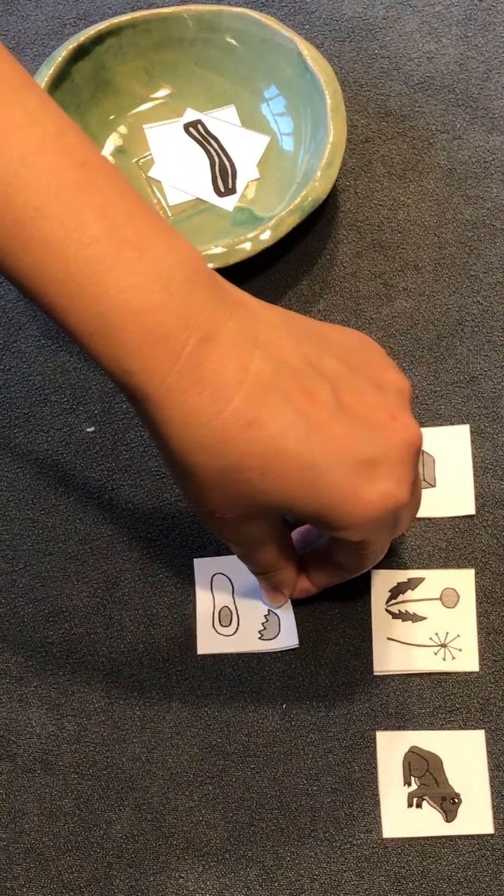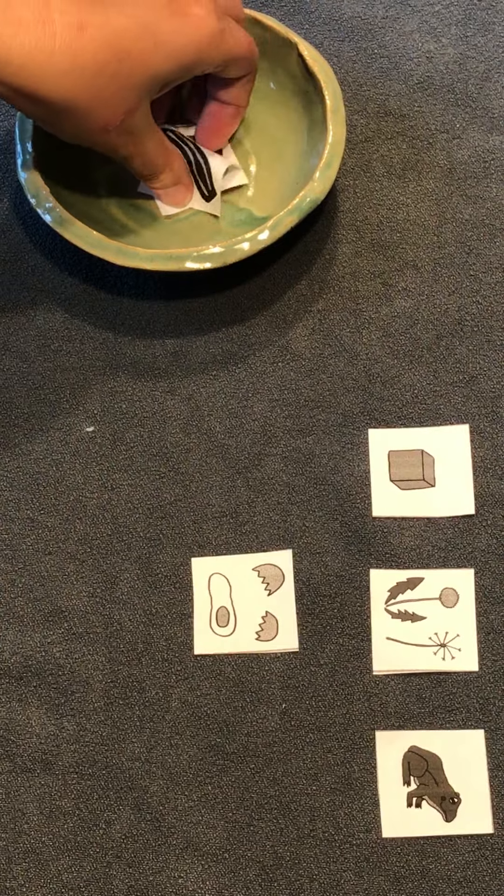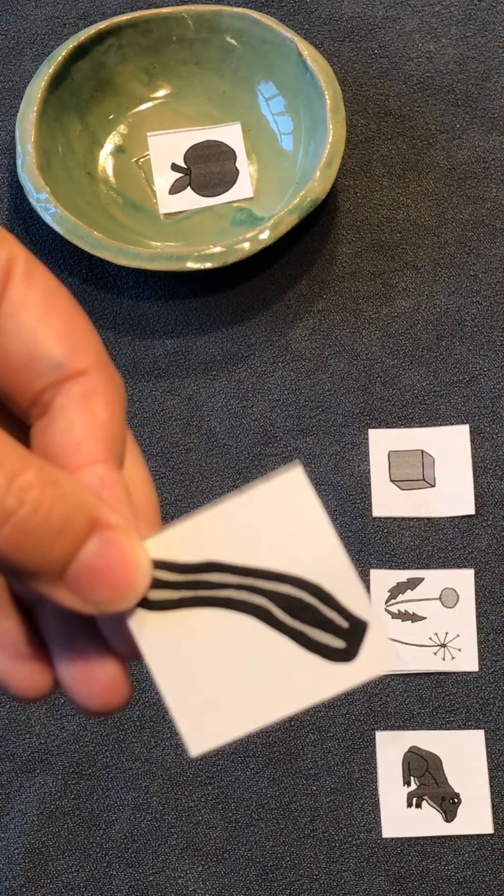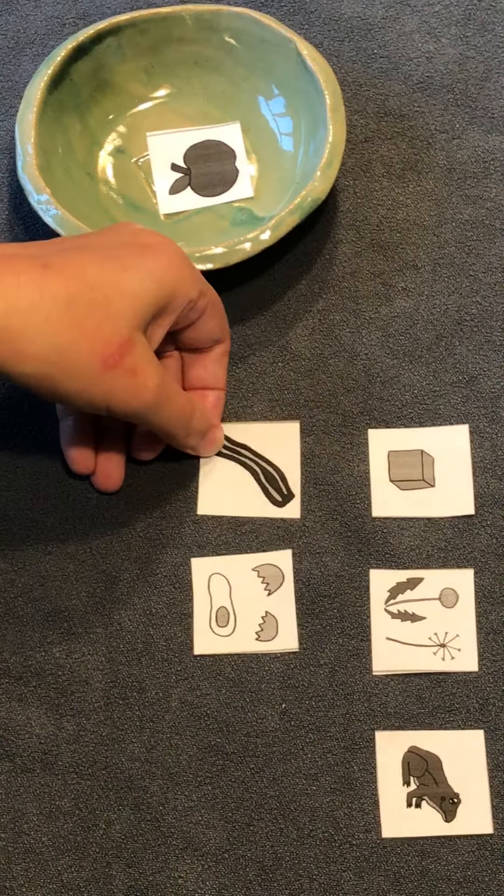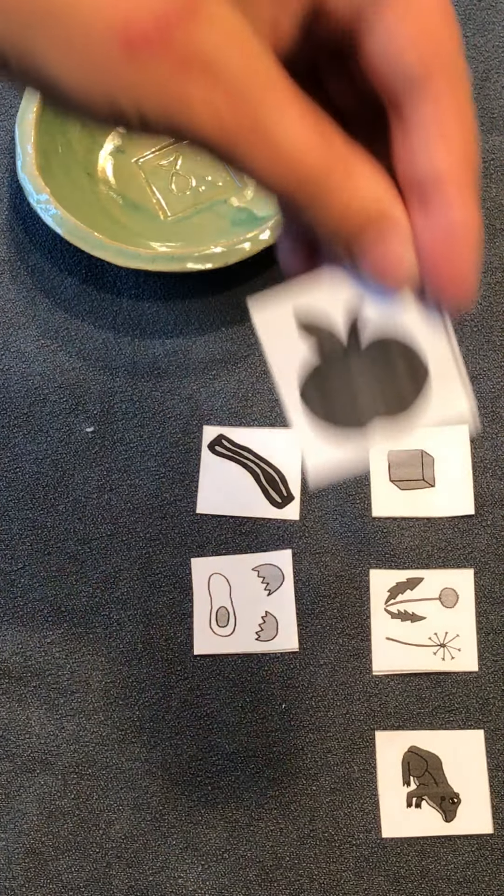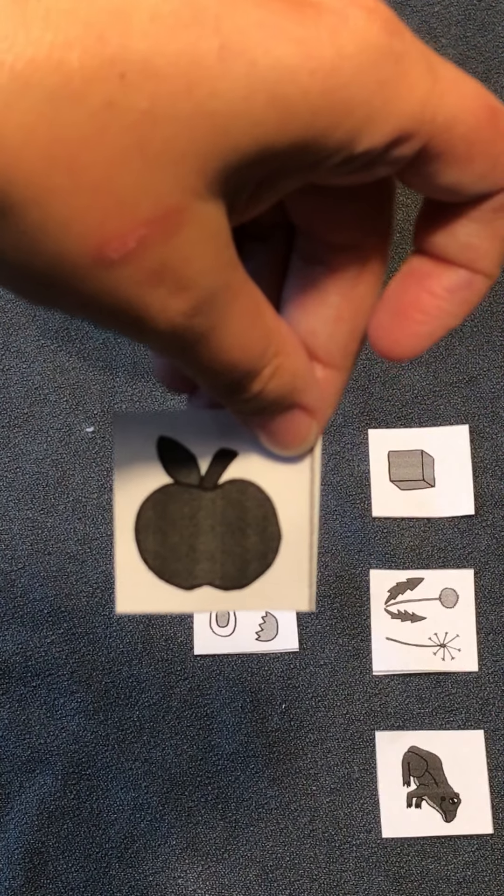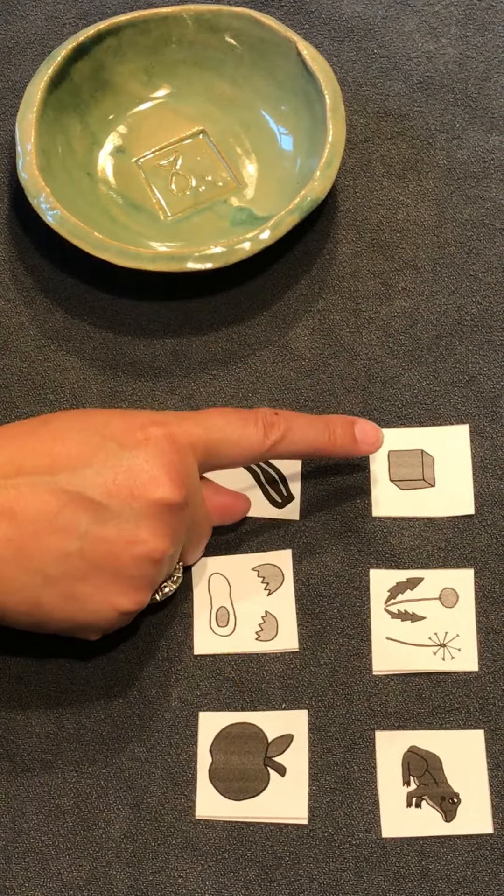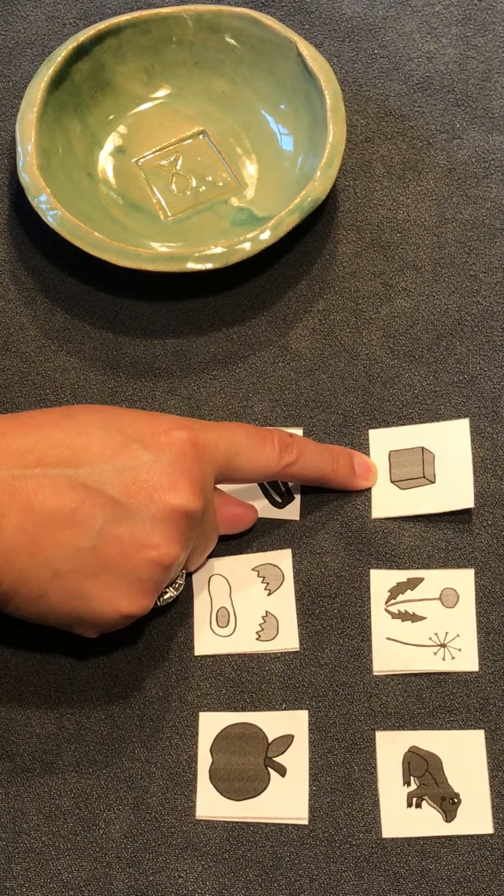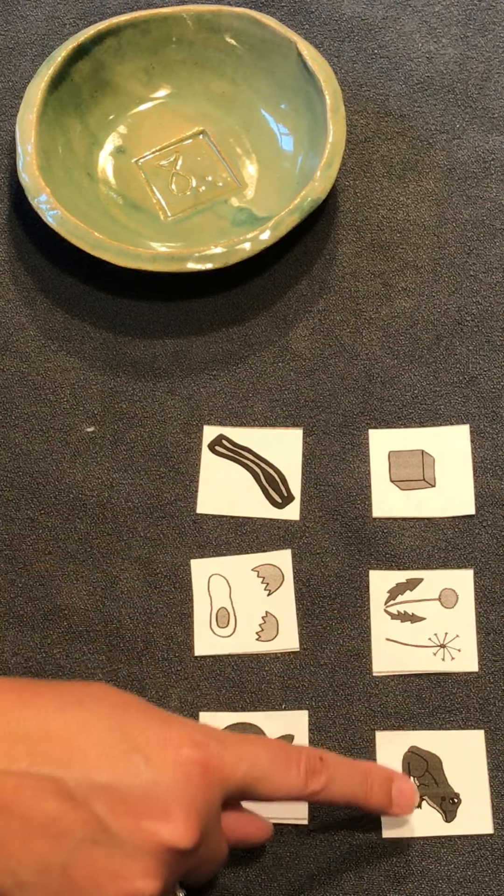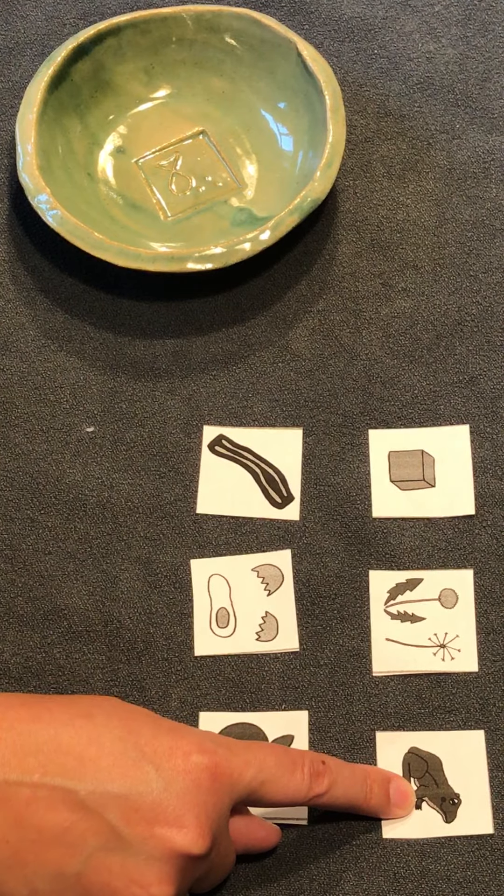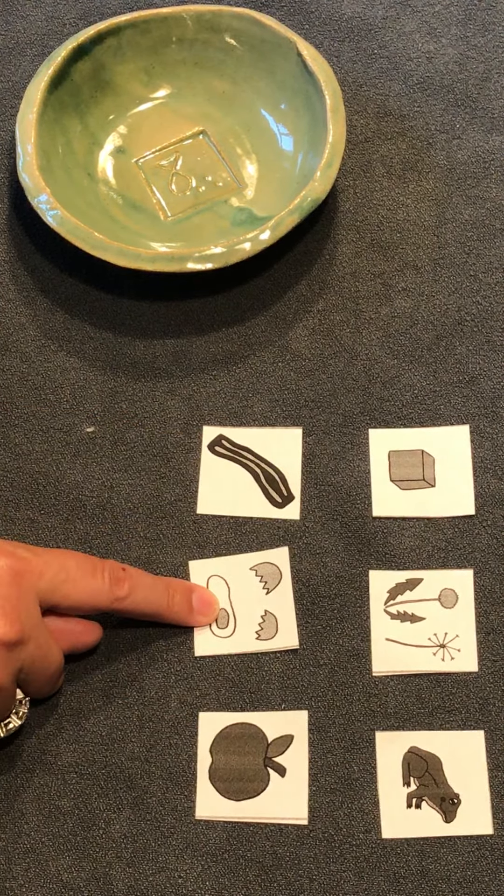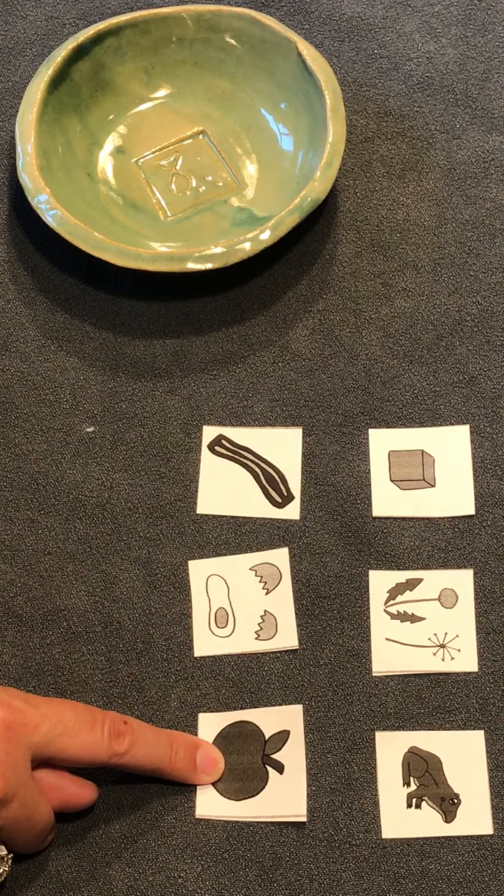I just put them in any random order. This is bacon and this is an apple. So I have cube, dandelion, frog, bacon, egg, and apple.